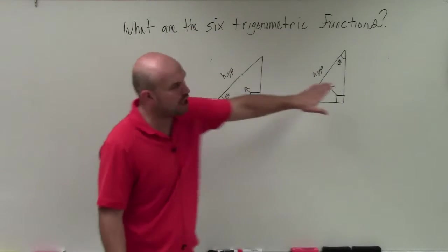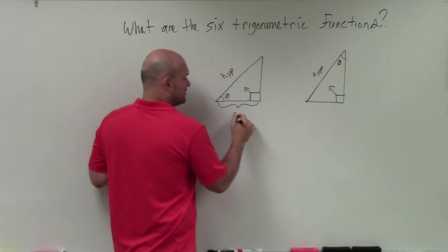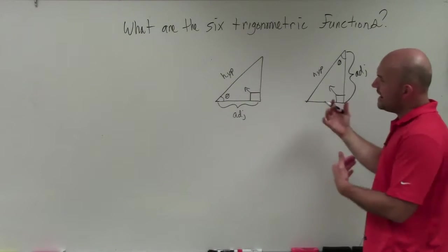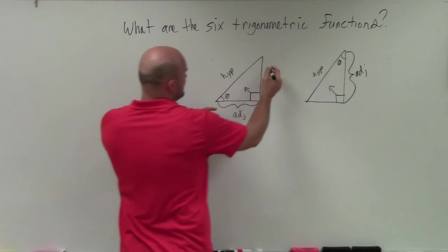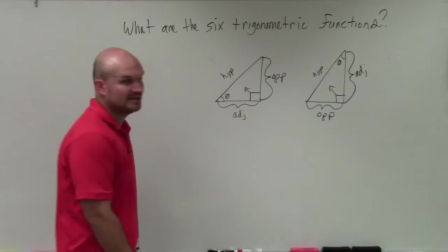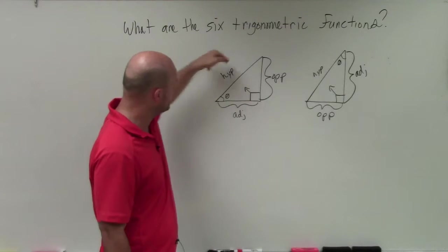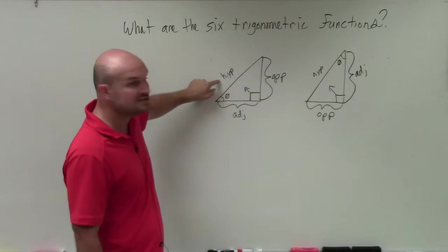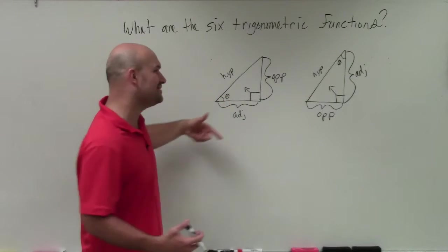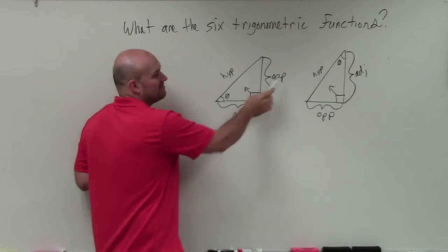The hypotenuse is always directly across from the right angle. The adjacent side is always going to be between our right angle and our theta. So in the first triangle, here is our adjacent; in the second triangle, here is our adjacent. The opposite side is always the side length that is directly opposite our theta. So for angle theta, we have a few comparisons: the opposite side to the hypotenuse, the adjacent side to the hypotenuse, and the opposite side to the adjacent — as well as their three reciprocals. That gives us our six trigonometric functions.